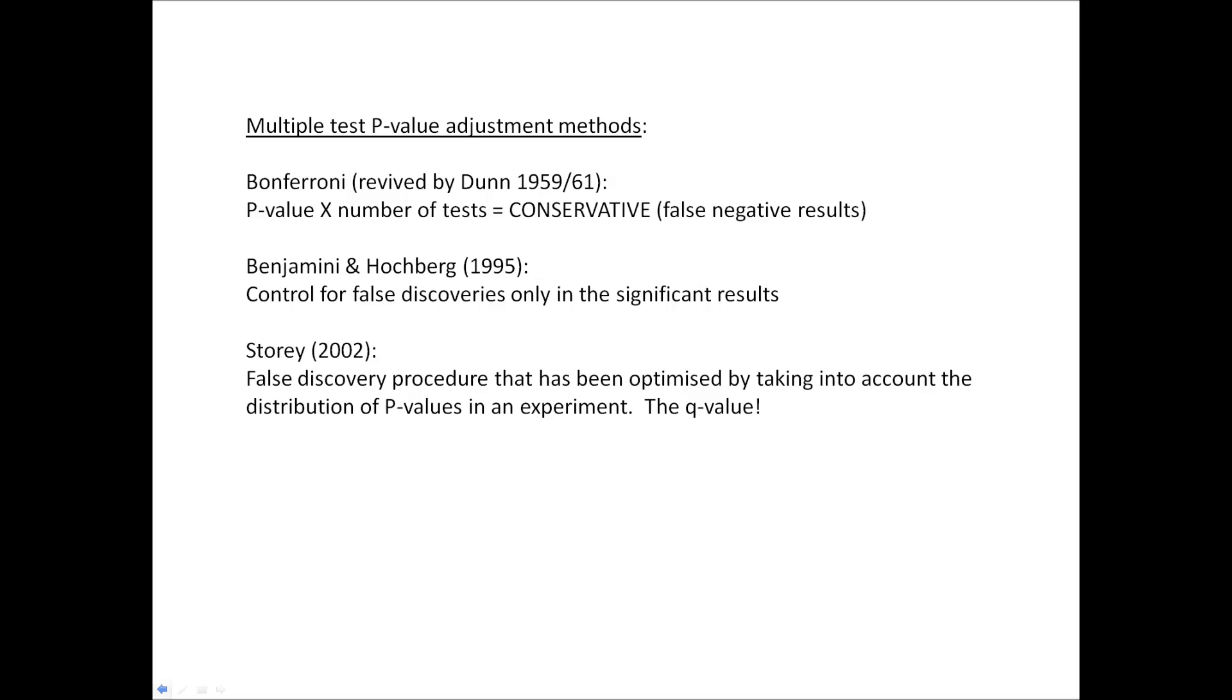There are different methods that attempt to correct for the effect of performing multiple tests by assigning an adjusted p-value. One of the best known methods is the Bonferroni correction that multiplies the p-value by the number of tests performed. This is widely accepted as being too conservative, resulting in the loss of real results, so-called false negative results.